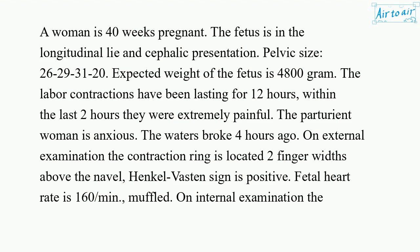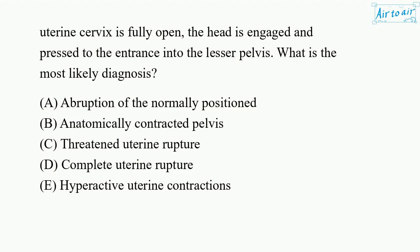On external examination, the contraction ring is located 2 finger widths above the navel. Henkel-Vasten sign is positive. Fetal heart rate is 160 per minute, muffled. On internal examination, the uterine cervix is fully open, and the head is engaged and pressed to the entrance into the lesser pelvis. What is the most likely diagnosis?